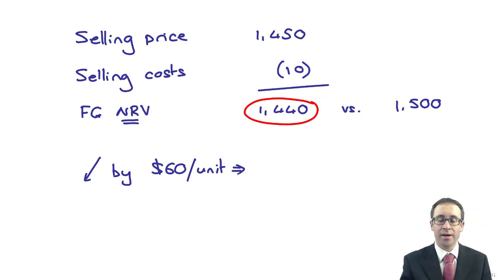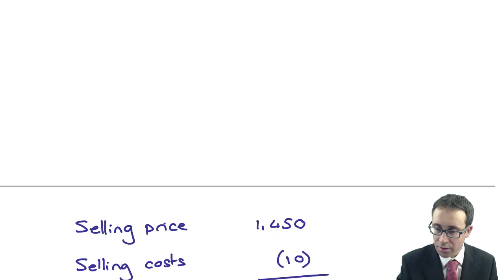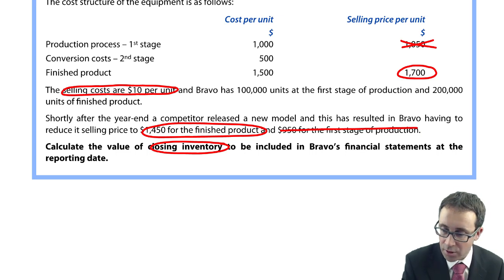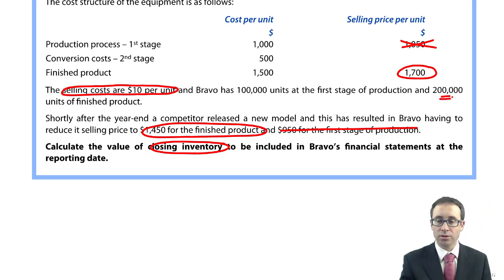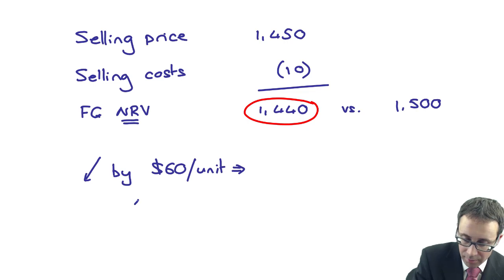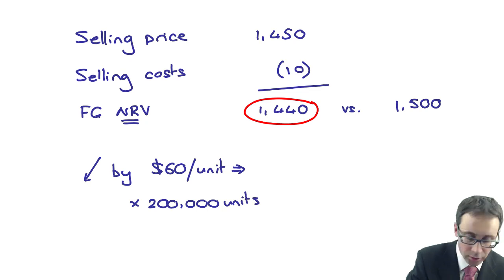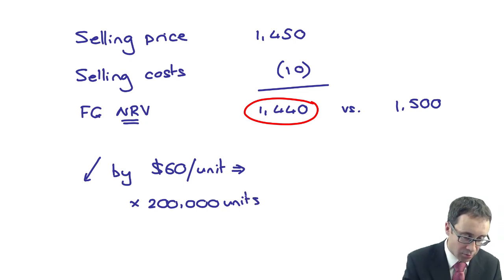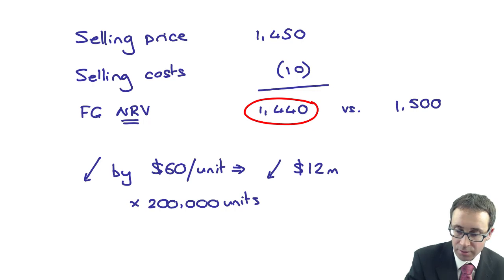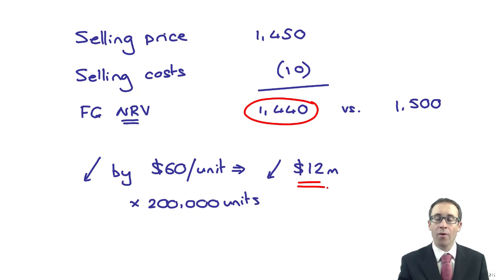The reduction is $60 per unit applied to the 200,000 units of finished goods. That gives us a reduction of $12 million, which is the adjusting figure. We need to reduce the inventory by $12 million because it is already included at cost.